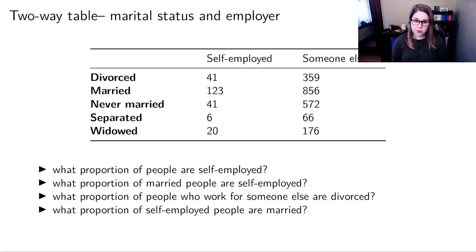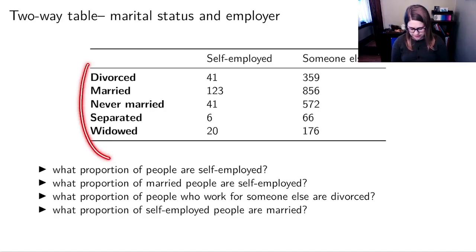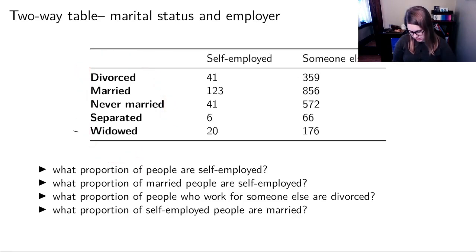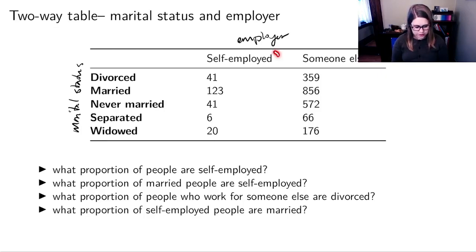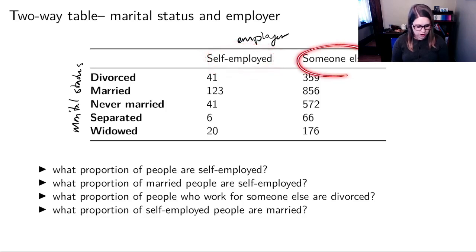In a two-way table, you have two different categorical variables. In this case, I've got marital status and my other variable is employer. Employer is another categorical variable, which has two categories: you're self-employed or you work for someone else.